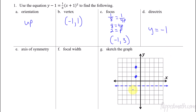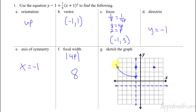The axis of symmetry goes straight up and down connecting the vertex and the focus — that line is x equals negative one. The focal width is the absolute value of 4p, which we showed is eight. So at the focus the parabola has a width of eight — I go four units this way and four units the other way. That allows us to sketch the basic shape: from the vertex, curving up on both sides.